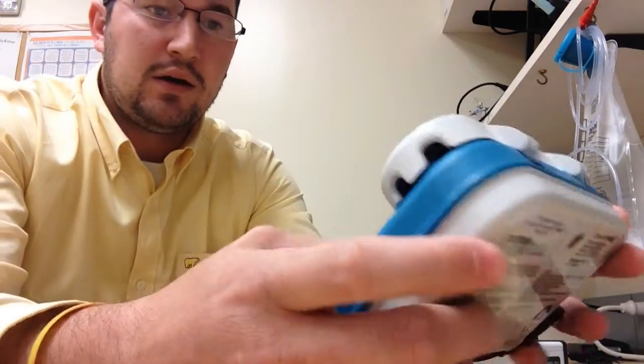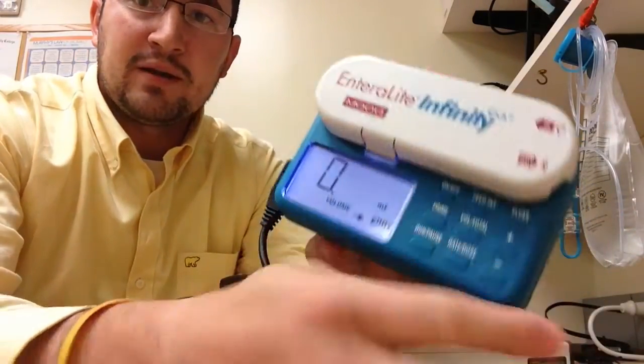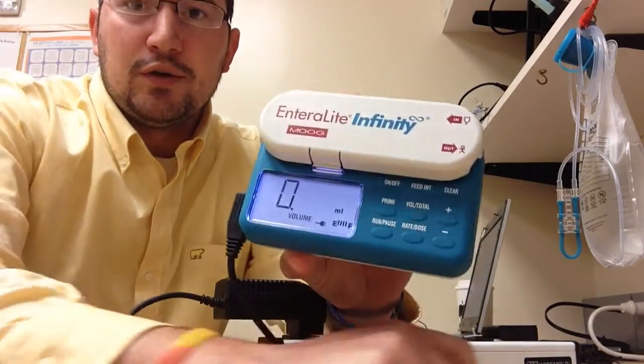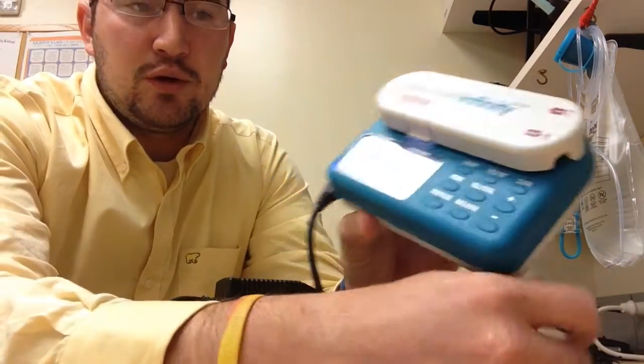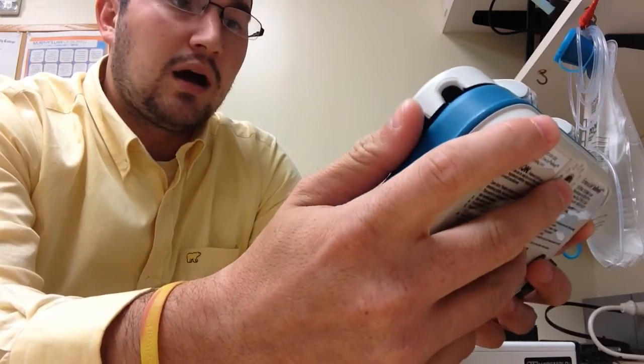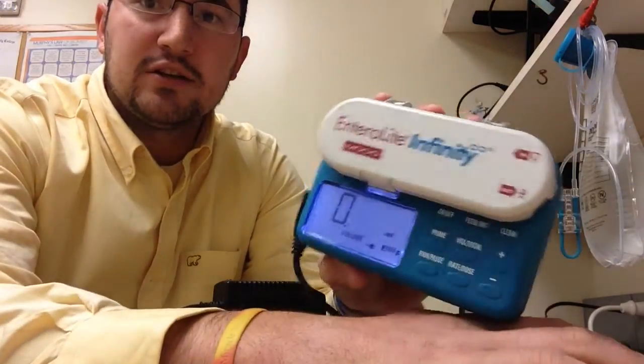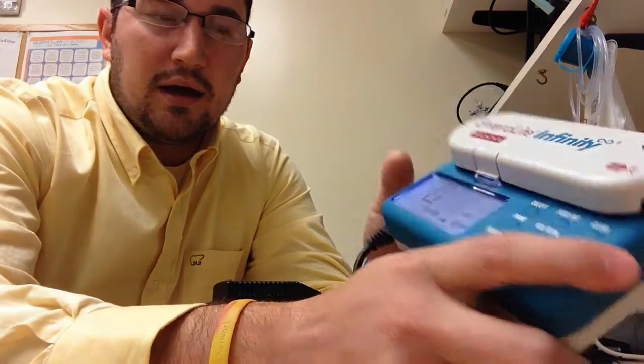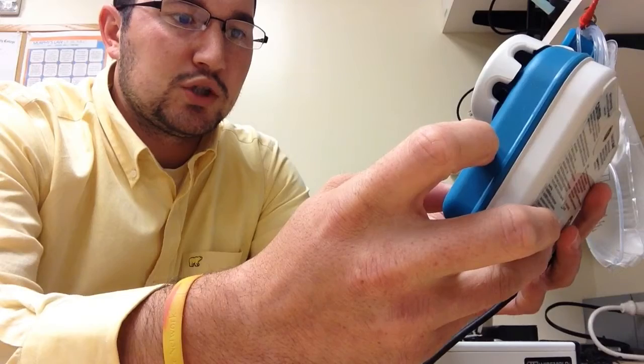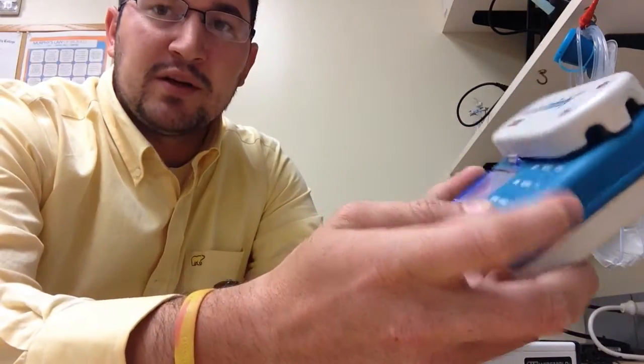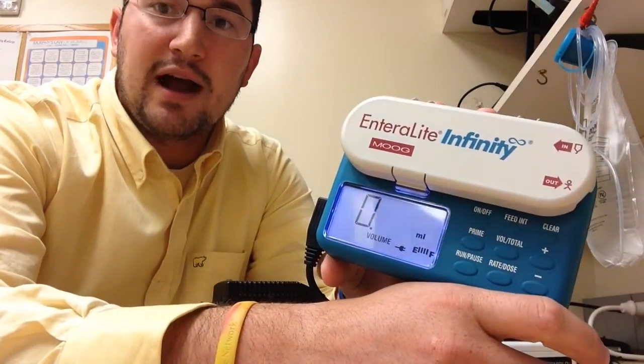So with programming the pump and running infusions, we do two infusions. One's 120 milliliters at 240 per hour, and the other one is 20 milliliters at 40 milliliters per hour.